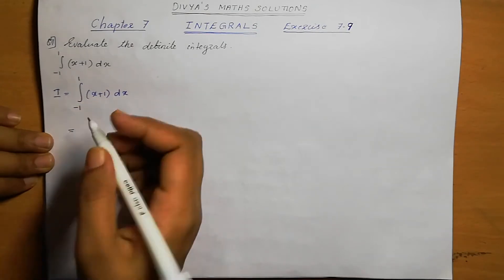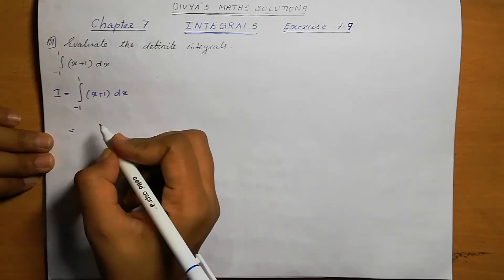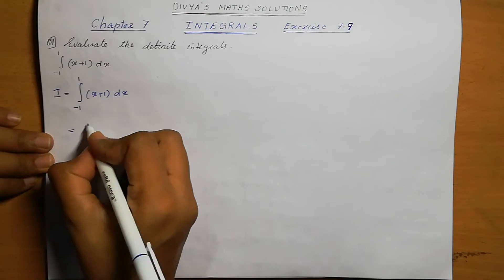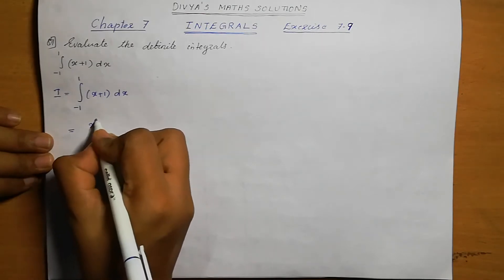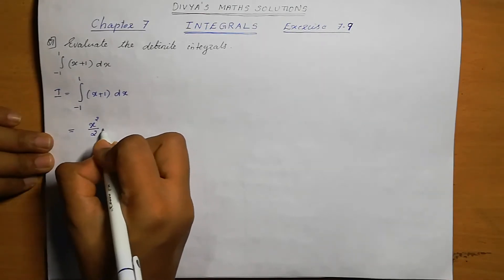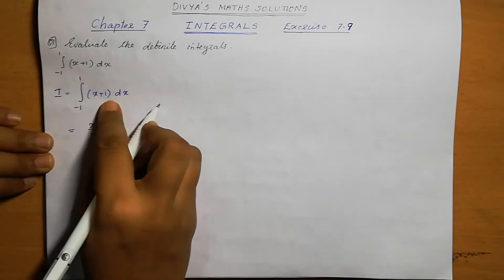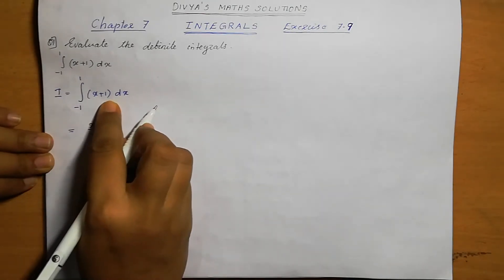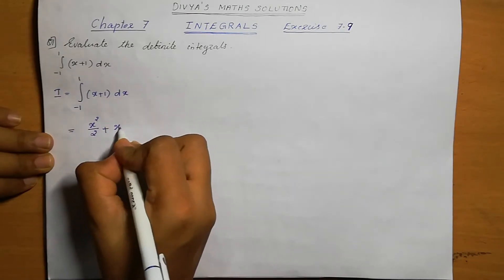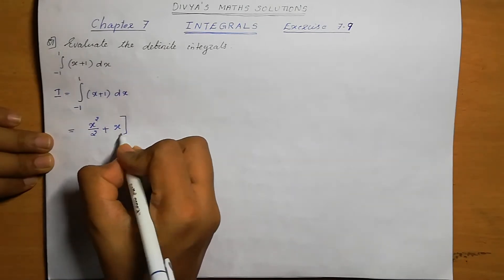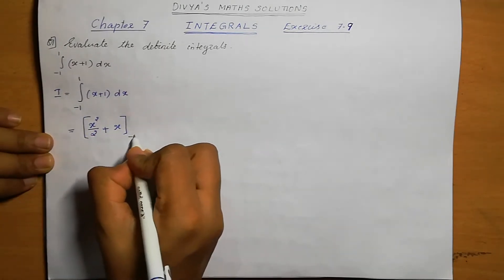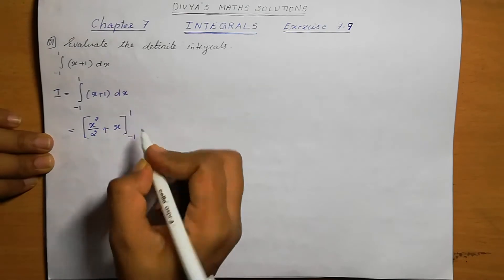What is the integral of x? Using x raise to n plus 1 by n plus 1, that means x square by 2. Plus the integral of 1, which is x. So the result is x square by 2 plus x, within the limit minus 1 to 1.